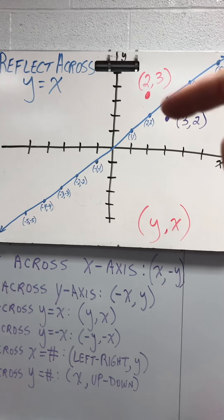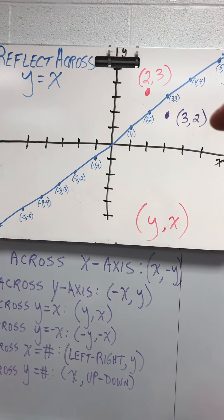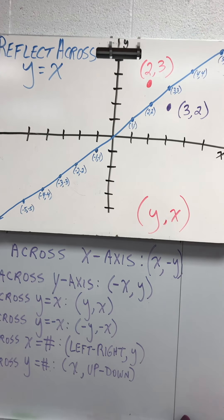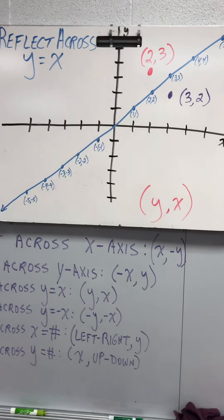If your original point is here, your reflection is here. Do you see how from 3, 2, it goes to 2, 3? So your reflection is y, x. Okay?